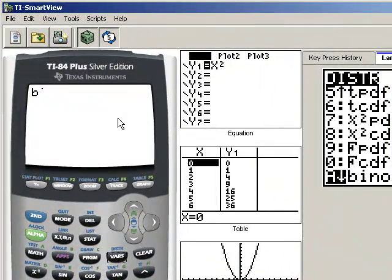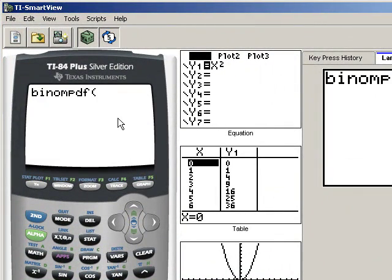And then I'm going to enter it in, just as I saw it, as N, 12, comma, P, 0.8, comma, and then 2 for my X. And I hit enter.